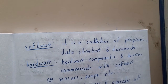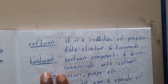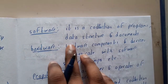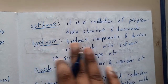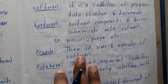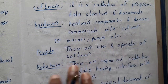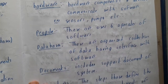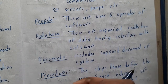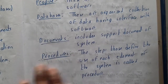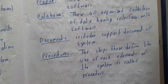The things that come under a software-based system include: software — a collection of programs, data structures, and documents; hardware — components and devices like sensors that communicate with each other and operate the software; database — organized to collect data and interface with the software; documents — supported documentation; and procedures — blocks of code.